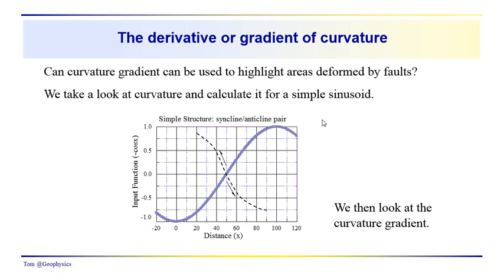We're going to use a simple sinusoid in order to evaluate this problem. We've got the peak over here, which could be an anticline. This would be a syncline. We're showing the fault here cutting the flank — in this case, a reverse fault. It could be a normal fault situation, but it probably wouldn't have this kind of divergence in your fold.